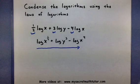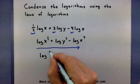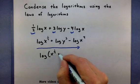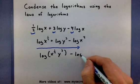Since they're being added, I'm going to use the product rule that says I will multiply their insides together. So x to the 1 half will be multiplied by y to the 3rd.